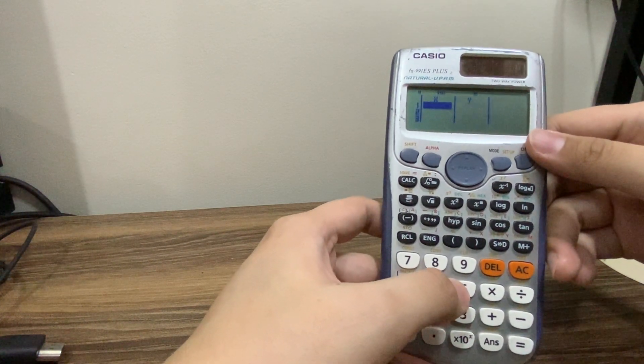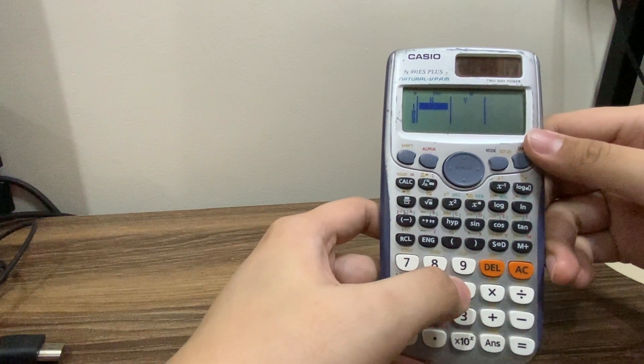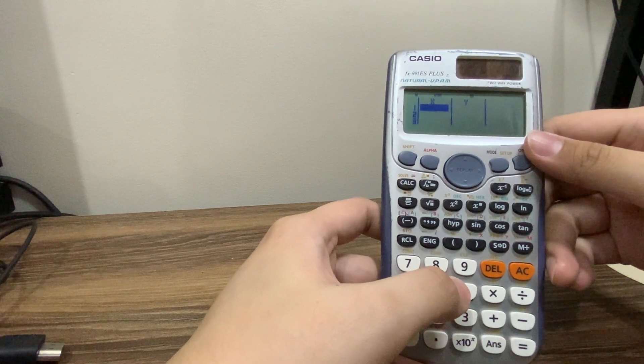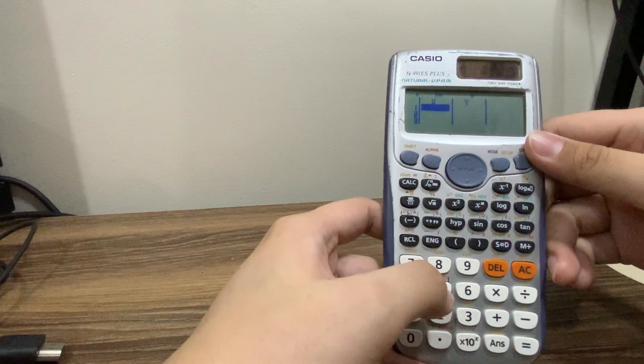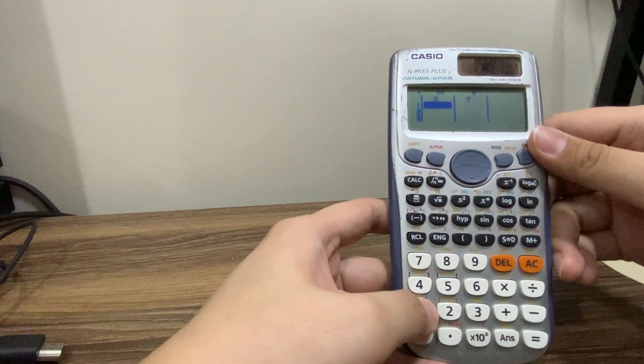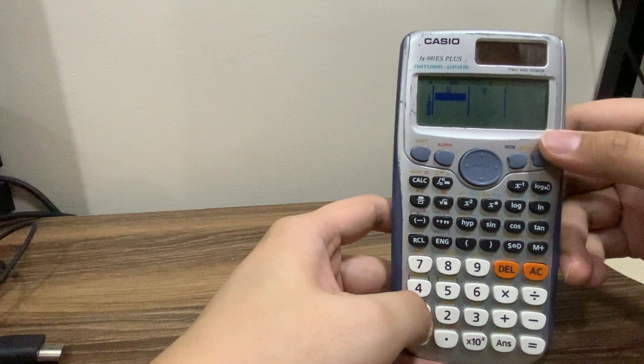So you would now input the two known values from our steam table. For example, we want to find the enthalpy of saturated vapor, water vapor at 102 degrees Celsius. But the given data is only at 100 and 105 degrees Celsius. So we'll do linear regression now.